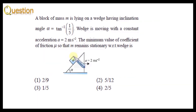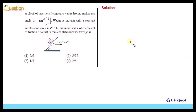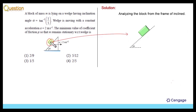In this question, it is given that this block is not sliding with respect to the sloping surface of the wedge, and the wedge is accelerating in the rightward direction. So it will be better to analyze the block from the wedge frame of reference, or non-inertial frame of reference. Let us make the free body diagram of the block. As we are considering the block from a non-inertial frame of reference, we need to consider the pseudo force, and we know pseudo force is opposite to the acceleration of the frame of reference.